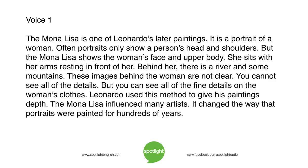The Mona Lisa is one of Leonardo's later paintings — a portrait of a woman. Often, portraits only show a person's head and shoulders, but the Mona Lisa shows the woman's face and upper body. She sits with her arms resting in front of her. Behind her, there is a river and some mountains. These images behind the woman are not clear — you cannot see all of the details. But you can see all of the fine details on the woman's clothes. Leonardo used this method to give his paintings depth. The Mona Lisa influenced many artists and changed the way portraits were painted for hundreds of years.